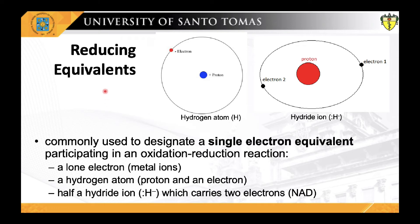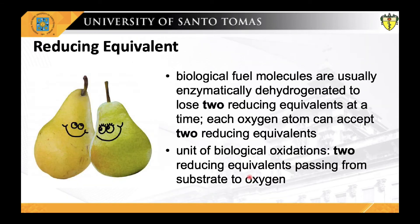All four types of electron transfer occur in cells. The neutral term 'reducing equivalent' is commonly used to designate a single electron equivalent participating in an oxidation-reduction reaction, whether it is an electron per se, a hydrogen atom, a hydride ion, or whether the transfer takes place in a reaction with oxygen. By convention, because biological fuel molecules are usually enzymatically dehydrogenated to lose two reducing equivalents at a time and each oxygen atom can accept two reducing equivalents, biochemists regard the unit of biological oxidations as two reducing equivalents passing from substrate to oxygen.